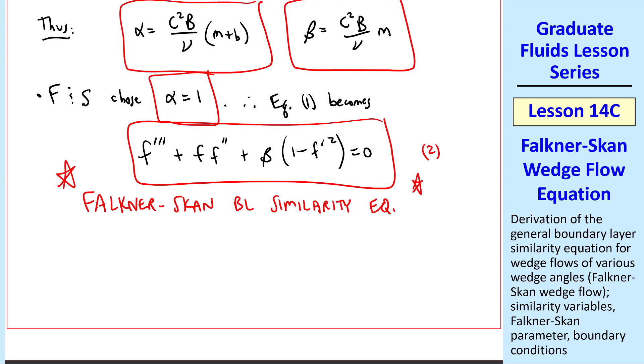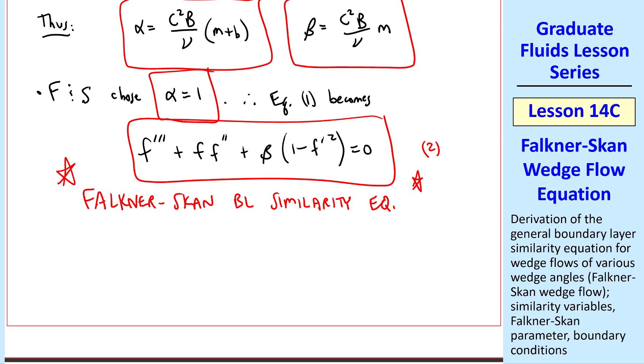And since our wall will always be at eta equals 0, and the boundary layer extends up to infinity, our boundary conditions are actually the same as those of the Blasius boundary layer, namely f of 0 equals 0, which we already specified when we got rid of that function of x in the equation for v. f prime of 0 equals 0. This is the no-slip condition. This first one is analogous to setting stream function equals 0 at the wall, which also forces v to be 0 there.